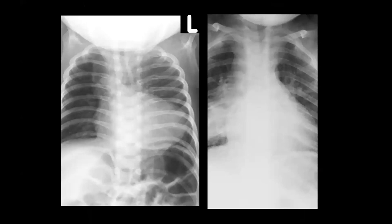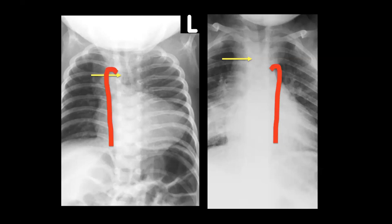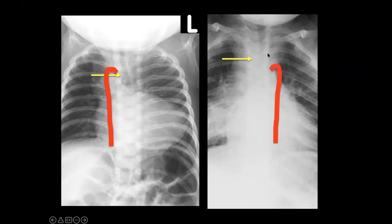Both of these tracheas are abnormal. We allow the trachea to go slightly right at the thoracic inlet with poor inspiration, and further right because we expect a left-sided aortic arch. But in both these cases, the trachea is displaced to the left. In our patient on the left, the aortic arch is right-sided, explaining the trachea's deviation. In the other case, a left-sided aortic arch means the trachea is being displaced by paratracheal lymphadenopathy — with hilar lymphadenopathy and airspace pacification in the right lower lobe in a patient with pulmonary tuberculosis.